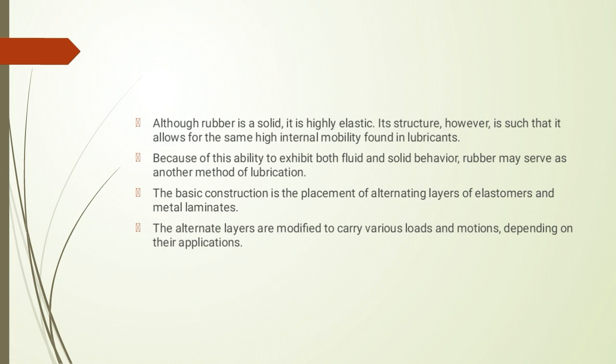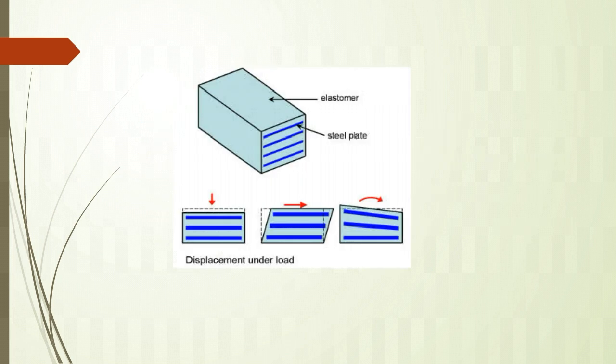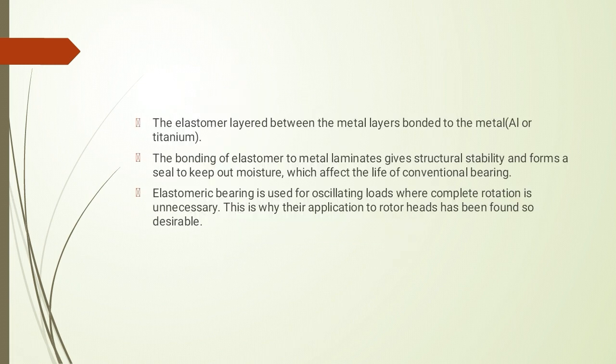Helicopter के rotor blade application में और propeller assembly में भी इनका इस्तमाल किया जाता है। The elastomer layer between the metal layers is bonded to metal — for example aluminum, titanium, or steel. Bonding of elastomer to metal laminate gives structural stability and forms a seal to keep out moisture, which affects the life of conventional bearings.